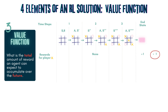Moving on to the value function: for each of the states that the player has passed through, the player will update the estimated value for those states based on whether he ended up winning or not. Recall that the value of a state is an estimate of the stream of future rewards the player will receive in an episode. At the start of training, all values are initialized to zero. After the first game, if our player won, he will assign a value of 1 to the last state he was in.